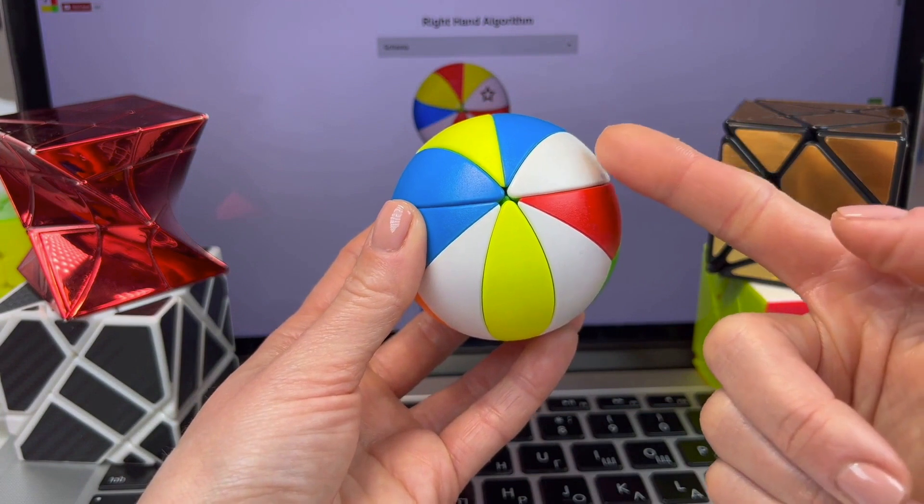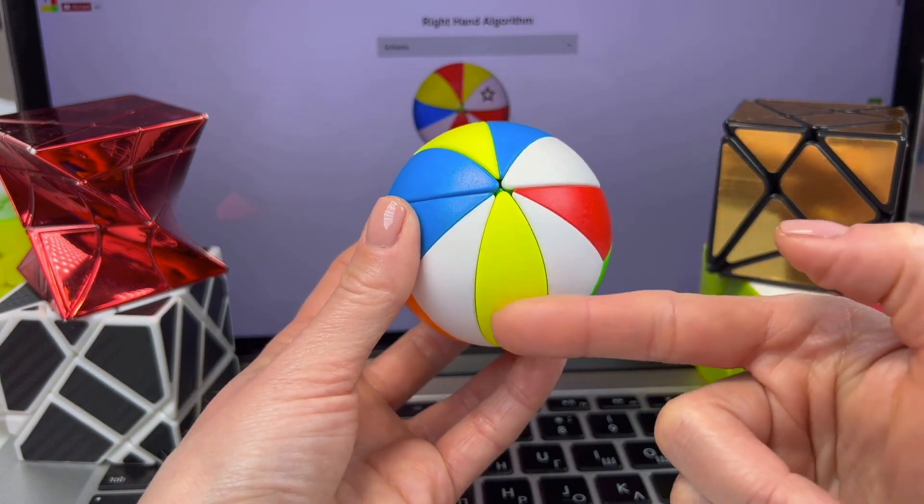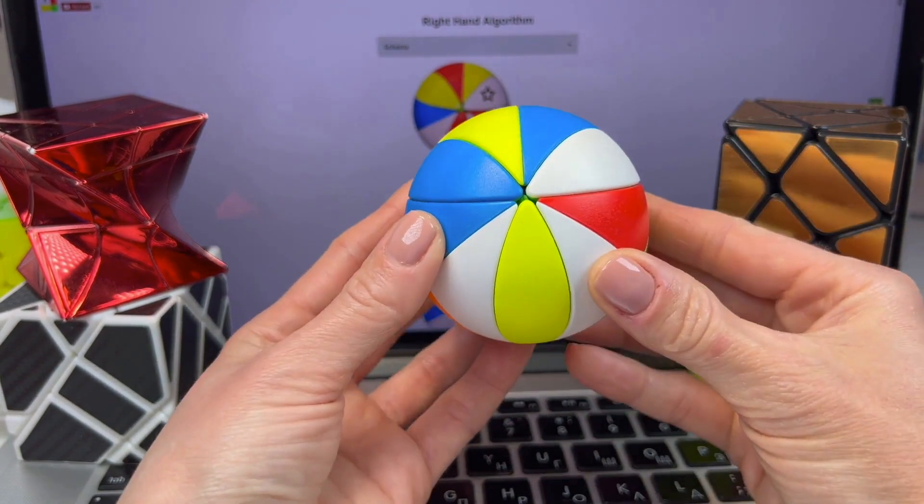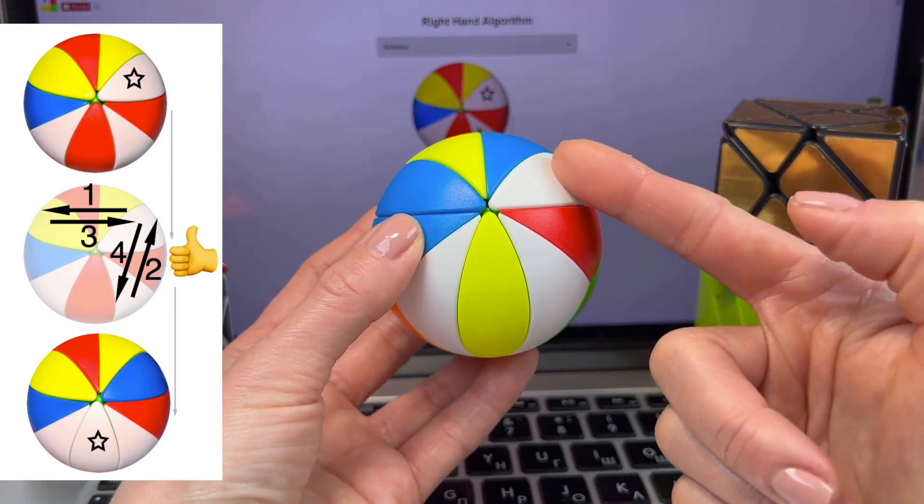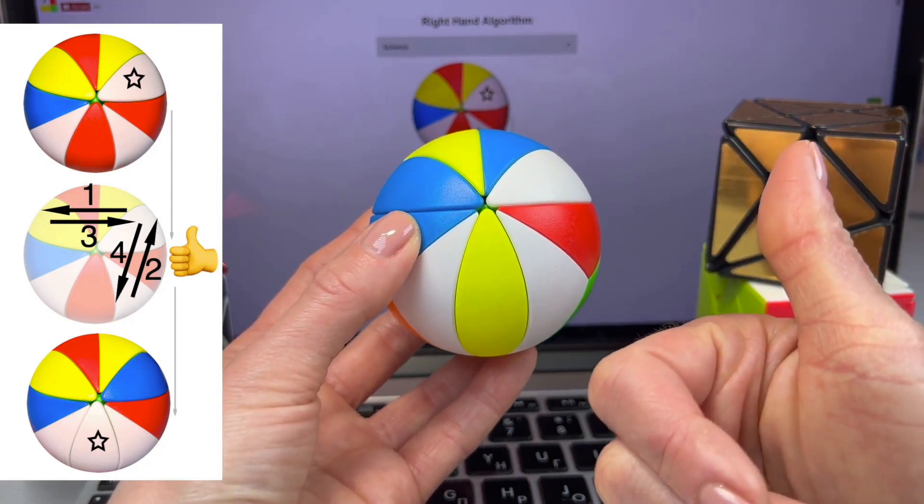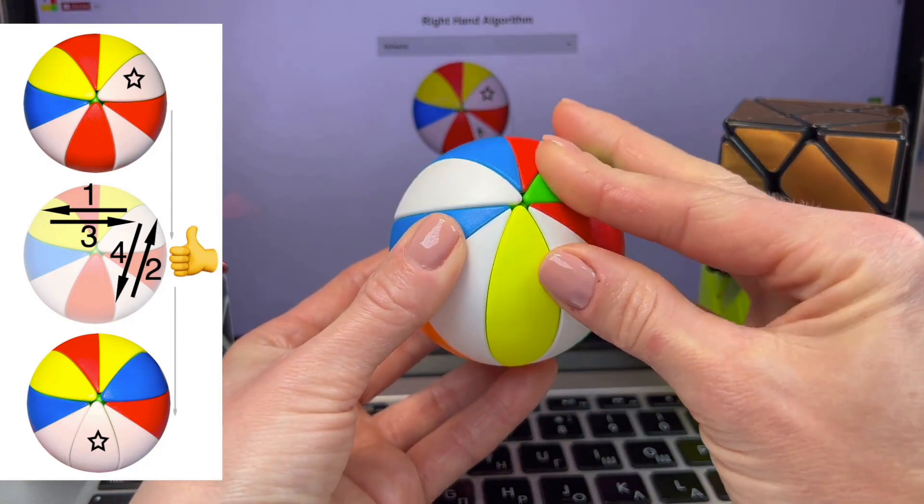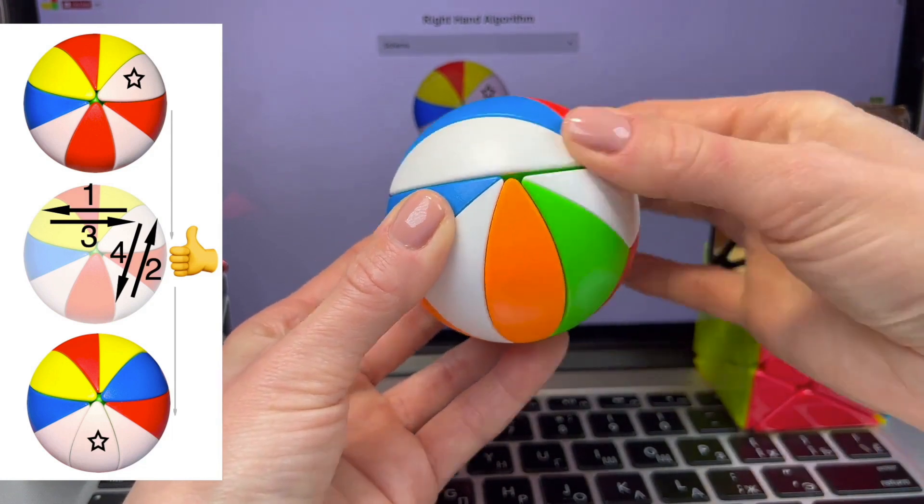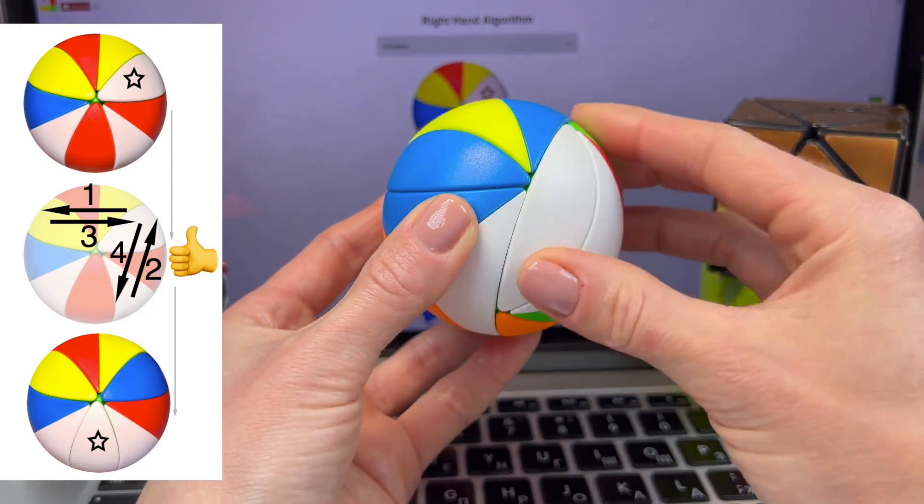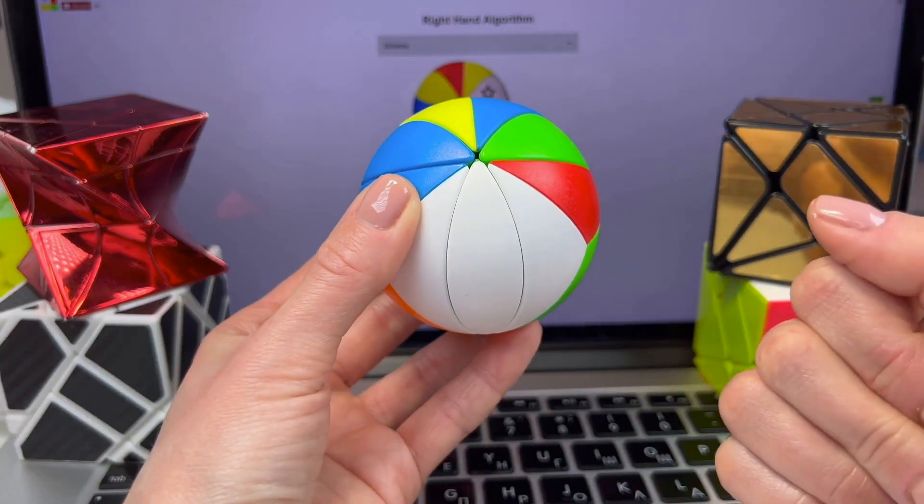To place this white petal in its spot on the white side, we hold the puzzle. So, if the petal is on the right, we apply the right-hand algorithm. That's it. The petal is in place.